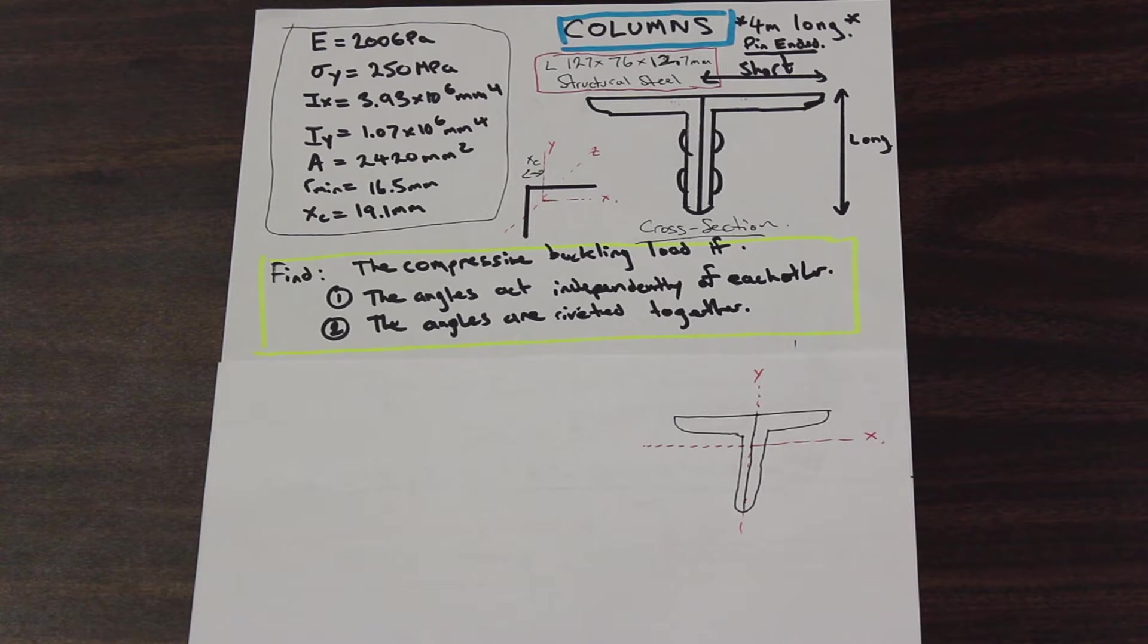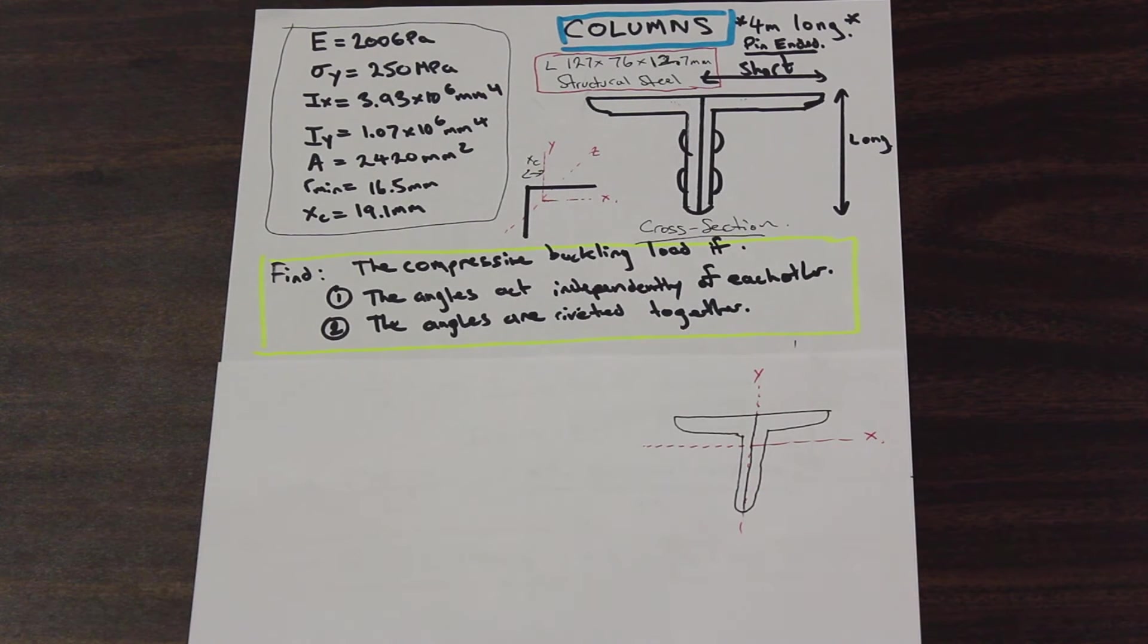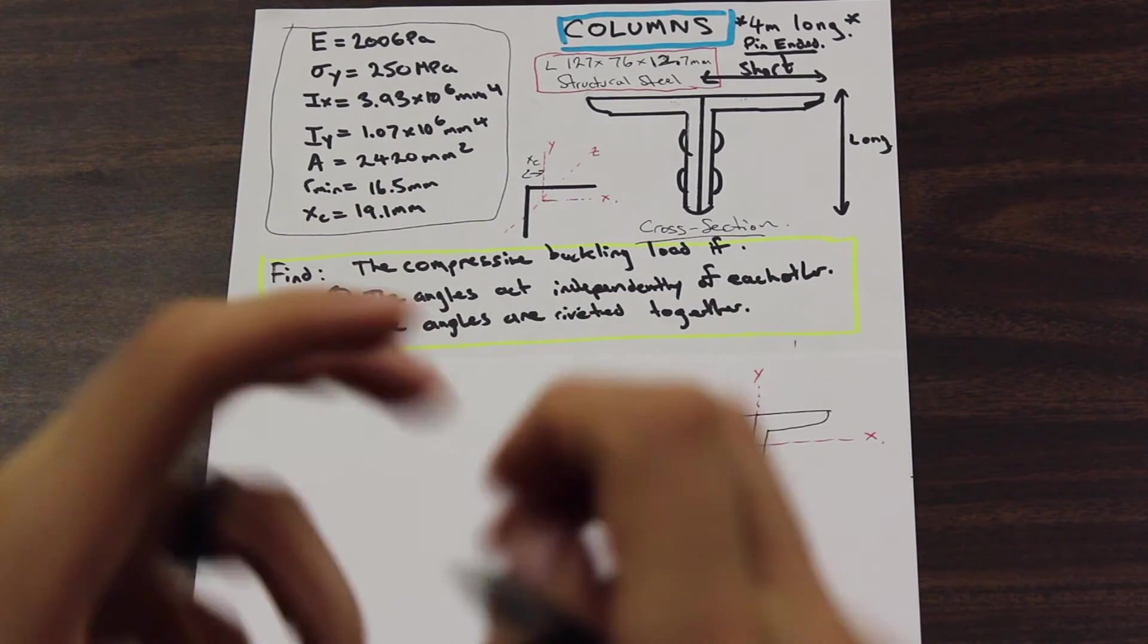The second part of the question asks us to find the Euler's compressive buckling load if the angles are riveted together. When they're riveted, it means they're bolted very tightly together and they can't spin or move.